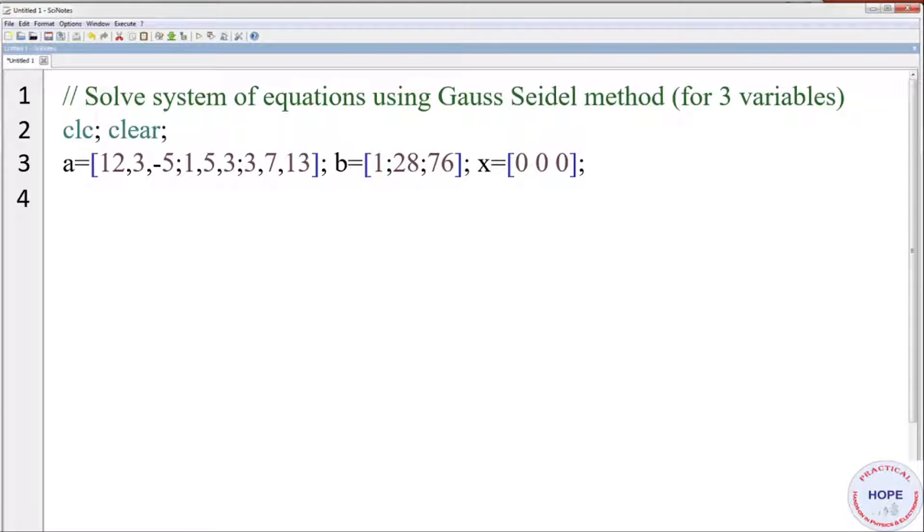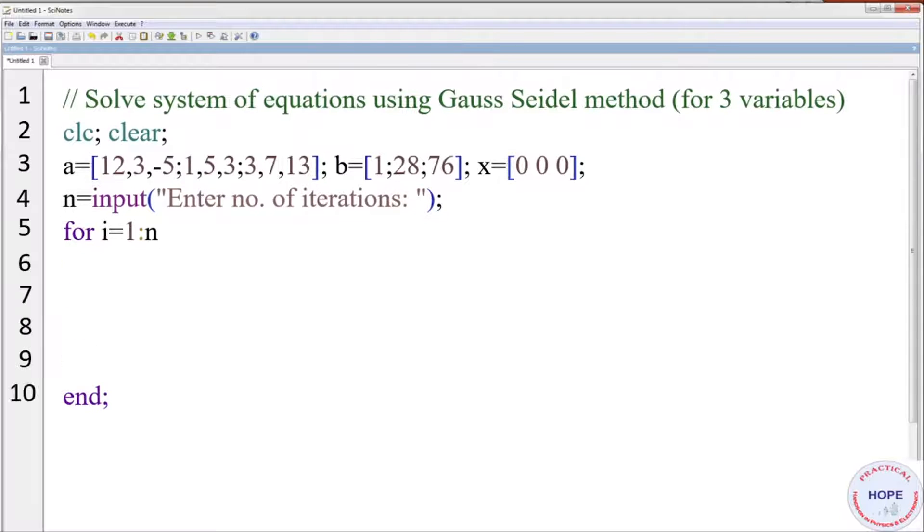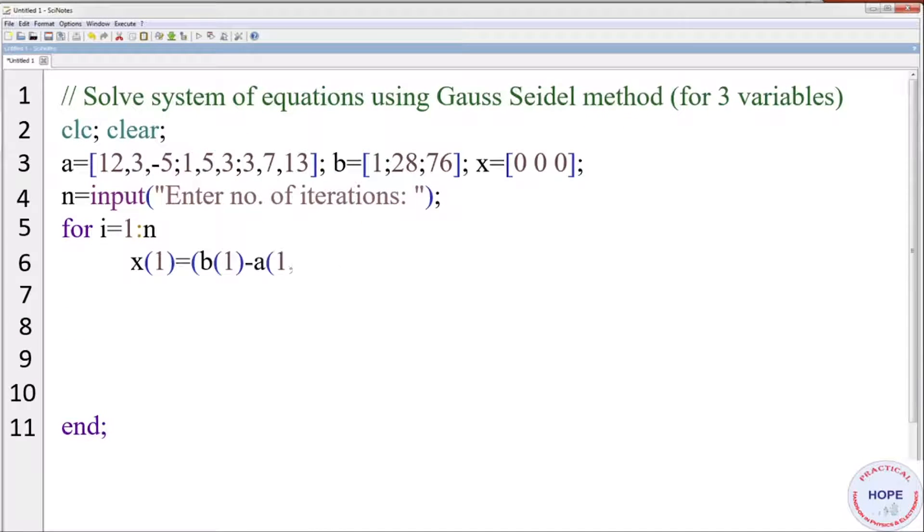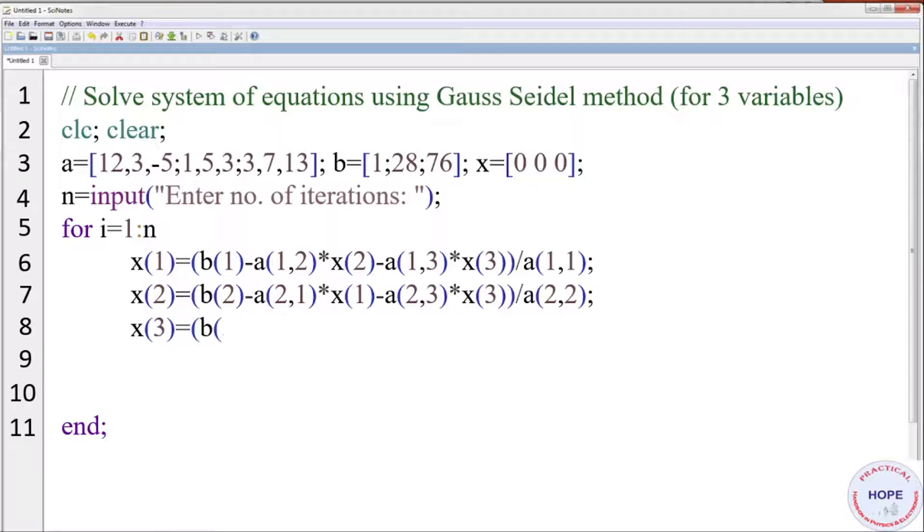Let's take the initial values of x1, x2, x3 as 0 in vector x. n is the input. Enter number of iterations. We need to provide the information of number of iterations to the program. Then we use a for loop that will run from 1 to n. First we calculate x1 from equation 1. Then we calculate x2 from equation 2. And finally we calculate x3 from third equation.